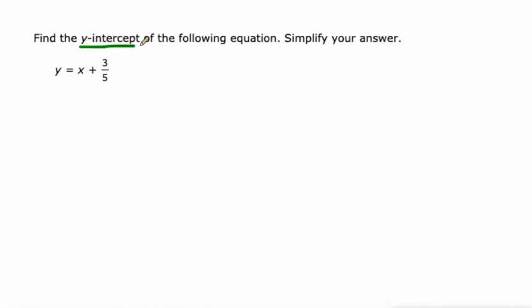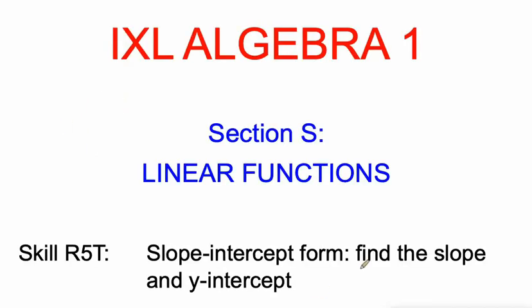And one more y-intercept. You got it. It's just that 3 fifths hanging off the end of the equation. So when x is 0, the y value will be 3 fifths. That's how you identify slope and y-intercept given slope-intercept form of an equation.